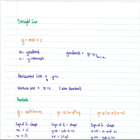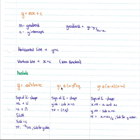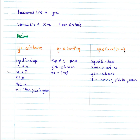A horizontal line has the formula y equals c where c is a constant, and a vertical line has the formula x equals c — however this is not a function. When dealing with the parabola we have three common forms: y equals ax squared plus bx plus c is the most common form; y equals a(x minus p) squared plus q is another common form; and less commonly, the root form y equals a(x minus x1)(x minus x2) where x1 and x2 are the roots. The sign of a gives you the shape of the graph.